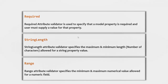In the last lecture, we learned about the required attribute. We use this required attribute validator to specify that a model property is required and the user must supply a value for that property. Just like this required attribute, we also have other built-in attributes which we can use on a model for model validation. In this lecture, we are going to talk about some of those built-in validator attributes. One of the attributes is the StringLength attribute, which specifies the maximum and minimum length allowed for a string property value.